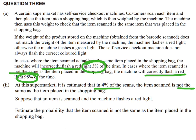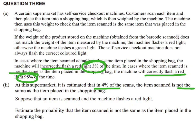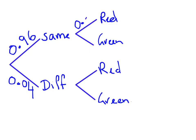Now for the 3%: when the item scanned is the same as the item in the bag, the machine incorrectly flashes a red light 3% of the time. So on the 'same' branch, the red light goes off 3% of the time, which means a green light occurs 97% of the time.